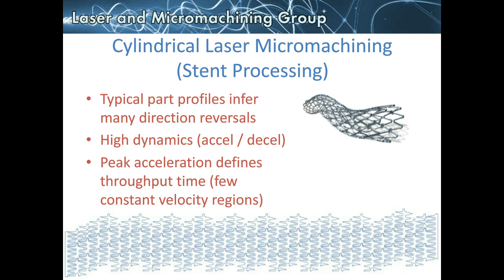We have very high dynamics in this kind of application. This is the fundamental limitation on throughput for the devices, because there are so very many direction reversals throughout part processing. This forms the limitation on how fast we can cut a device for a given part profile and a given set of motion mechanics, since we don't have infinite torque on that rotary and we don't have infinite force on the linear stage. Because there are not very many straight line segments, peak acceleration defines the throughput time — the maximum velocity you choose to travel may not be the limiting factor for cycle time. Rather, it's the acceleration, the ramp rates, the rate of change of velocity that defines part throughput time.